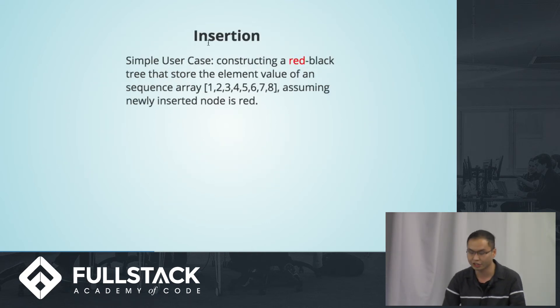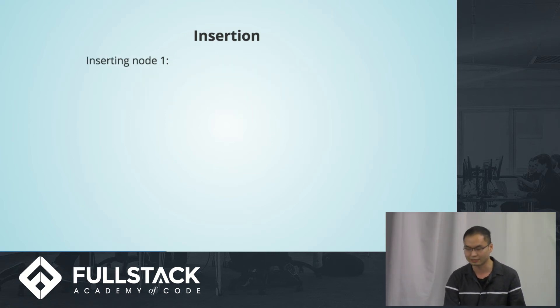For the insertion, due to the state of time constraint, I just do a very simple use case. Construct a simple red-black tree. Let's store the element value of a sequence array: 1, 2, 3, 4, 5, 6, 7, 8. Assuming newly inserted node is red. If you don't follow the red-black tree rule and do not do any tree operation, you will end up with a linked list, which is pretty useless. Let's just start at the beginning.